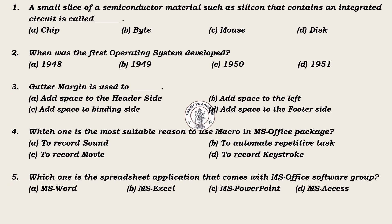Multiple choice questions. 1. A small slice of a semi-conductor material such as silicon that contains an integrated circuit is called: A. Chip, B. Byte, C. Mouse, D. Disk. Answer: A. Chip.